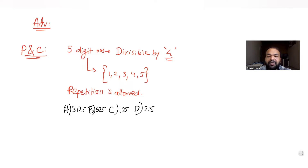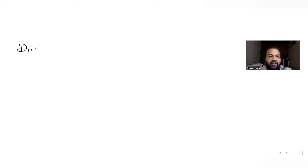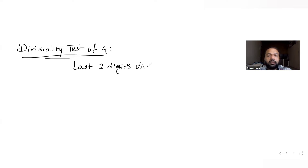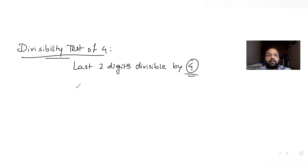Let's do that. To find if numbers are divisible by 4, we use the divisibility test of 4, which says that if the last two digits are divisible by 4, then the entire number is divisible by 4. So to form a 5-digit number, I just need to check whether the last two digits are divisible by 4 or not.